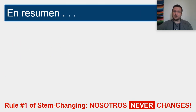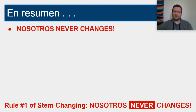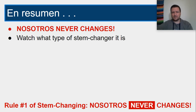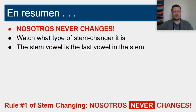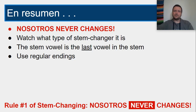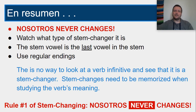So, in resumen — in summary — NOSOTROS never changes. That is the key, the number one rule. It's on every single slide of this presentation. Watch what type of stem changer you're using. We now know three types: IE, UE, and I, and you have to memorize which is which. The stem vowel — the one that's going to change — is always the last vowel of the stem. These stem changers all use regular endings, so if you don't know your regular endings yet, you need to memorize those. And there's no way to look at an infinitive and know what kind of stem changer it is — you have to memorize it as you study the verb.